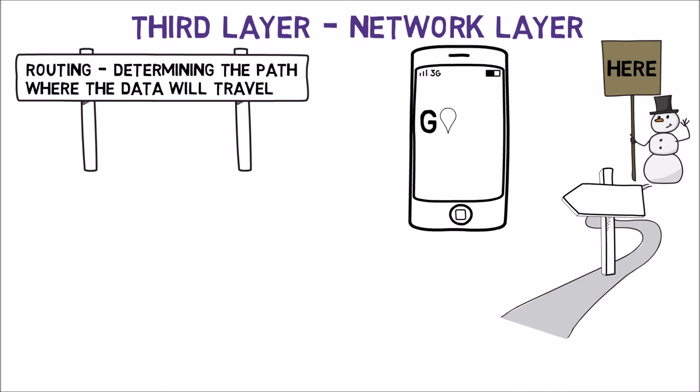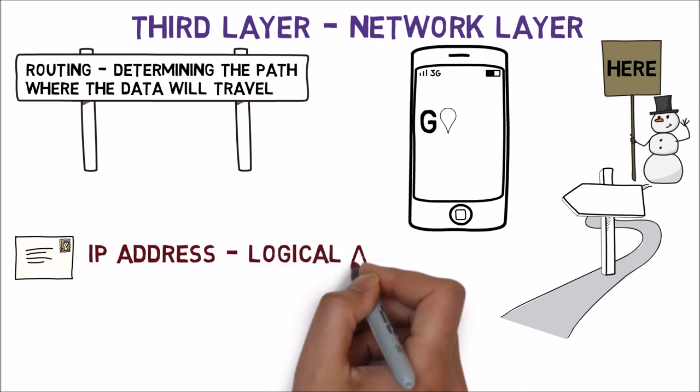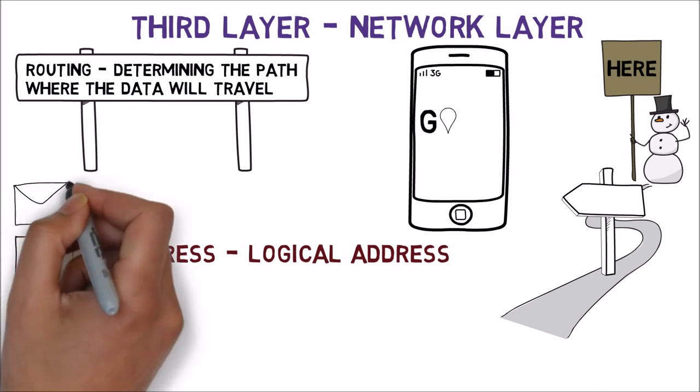We said that the second layer has physical addresses, called MAC addresses. The third layer is responsible for logical addresses, such as IP addresses. We'll learn about them in depth when we learn more about this layer. In the third layer, datagrams are called packets.